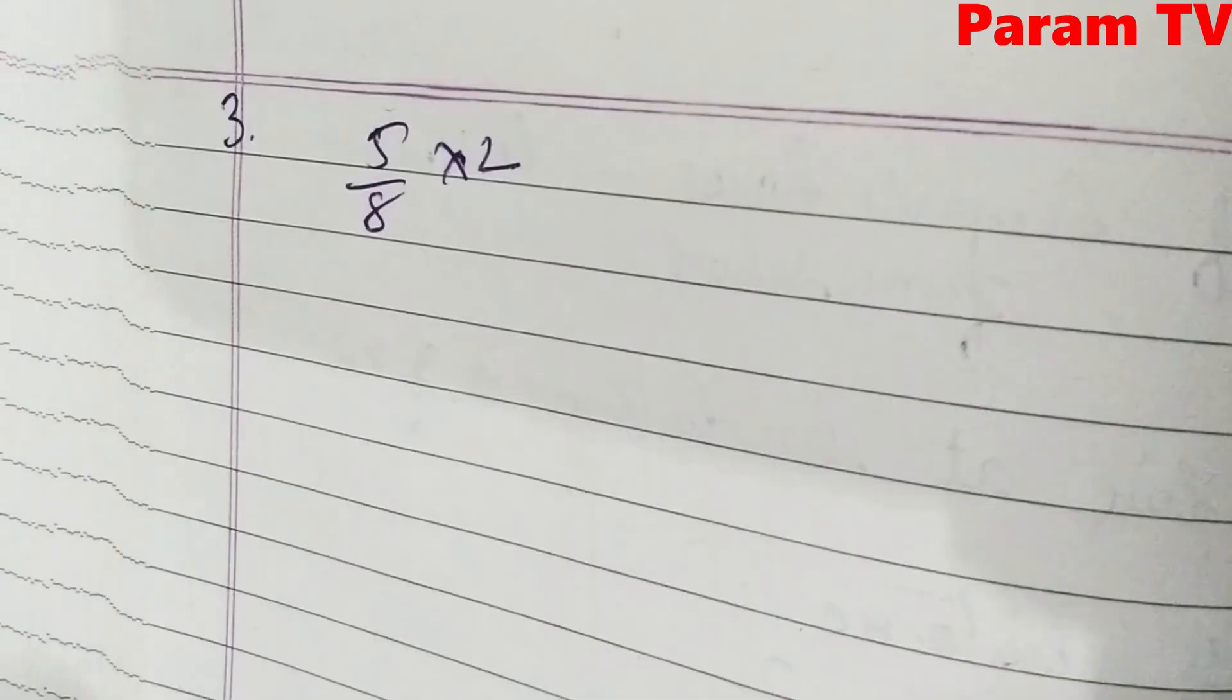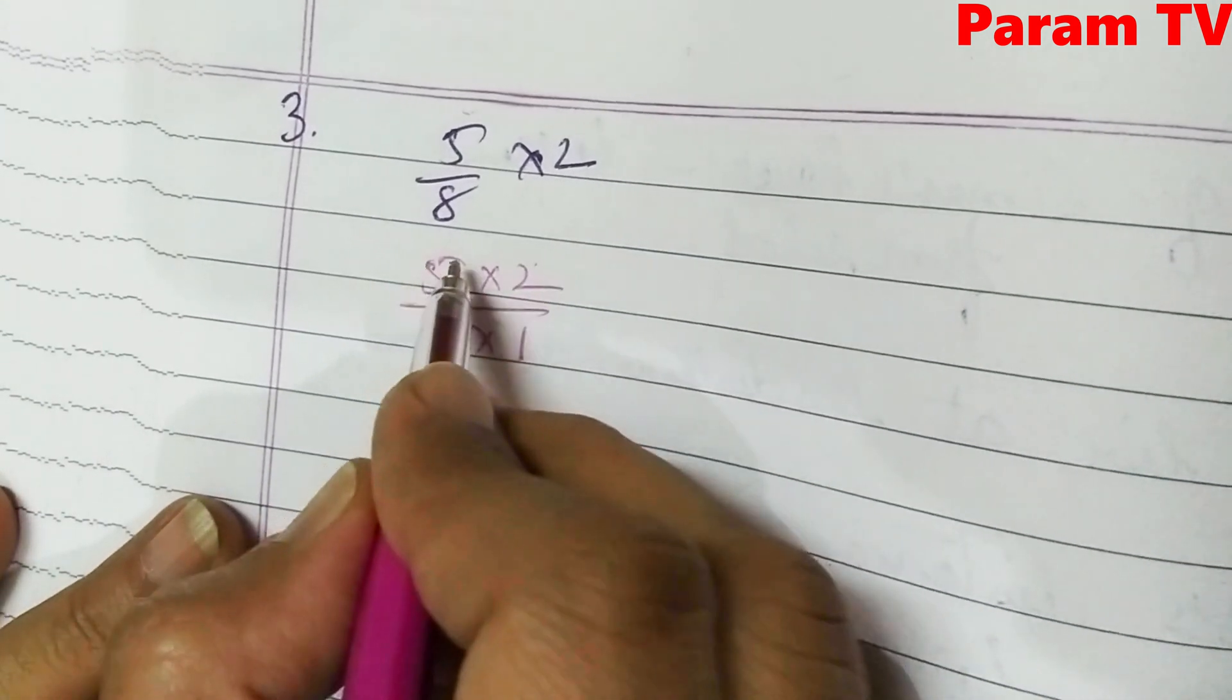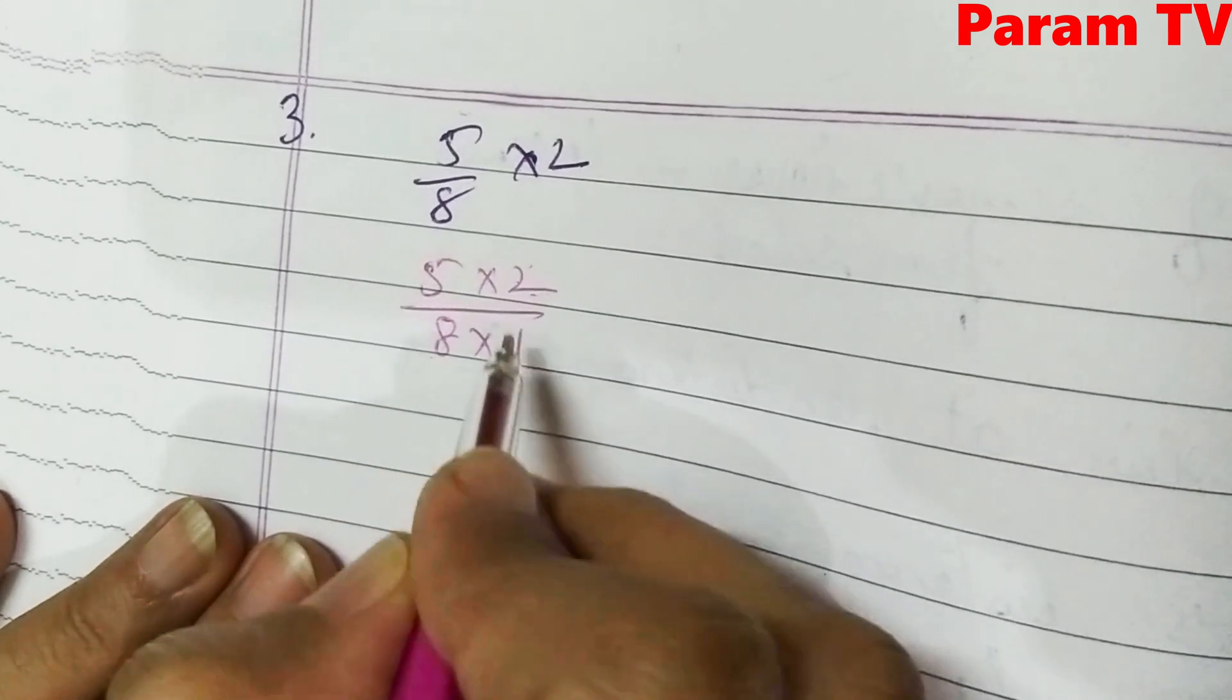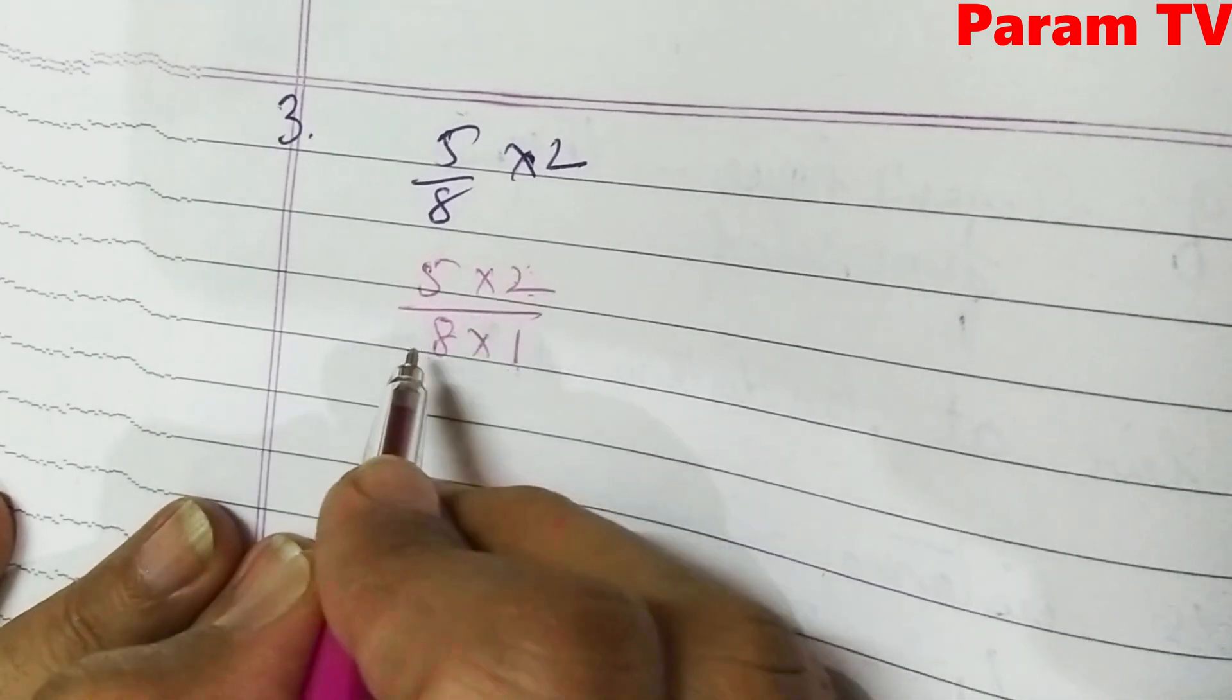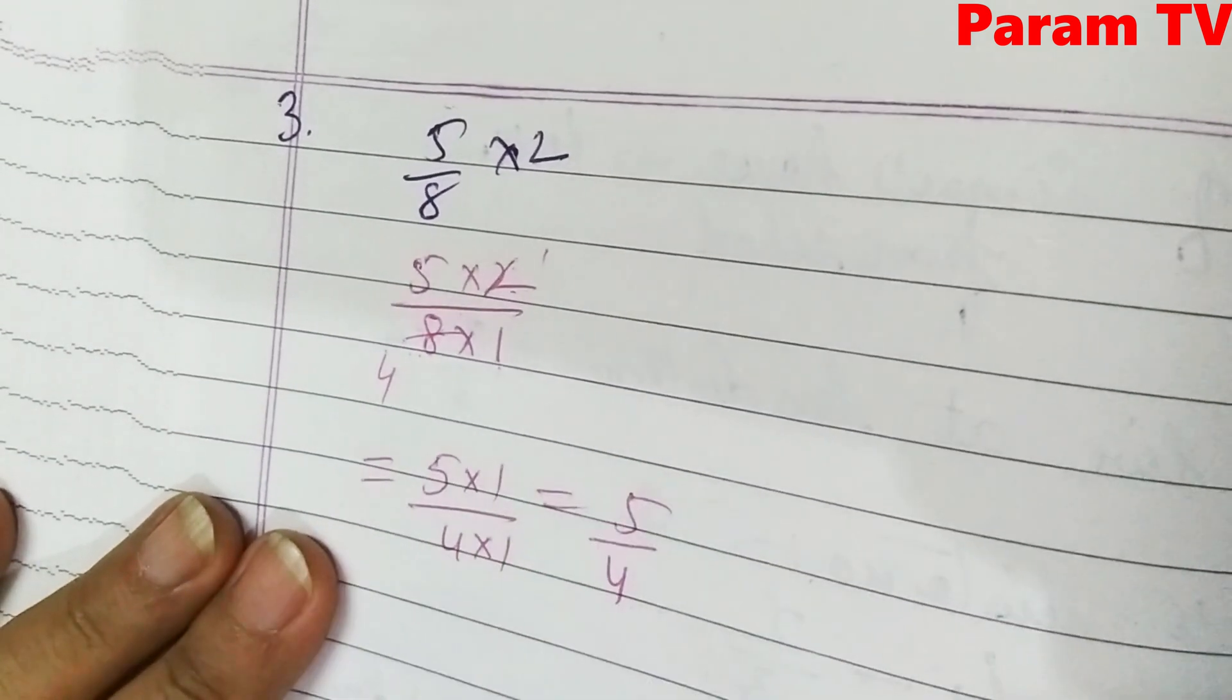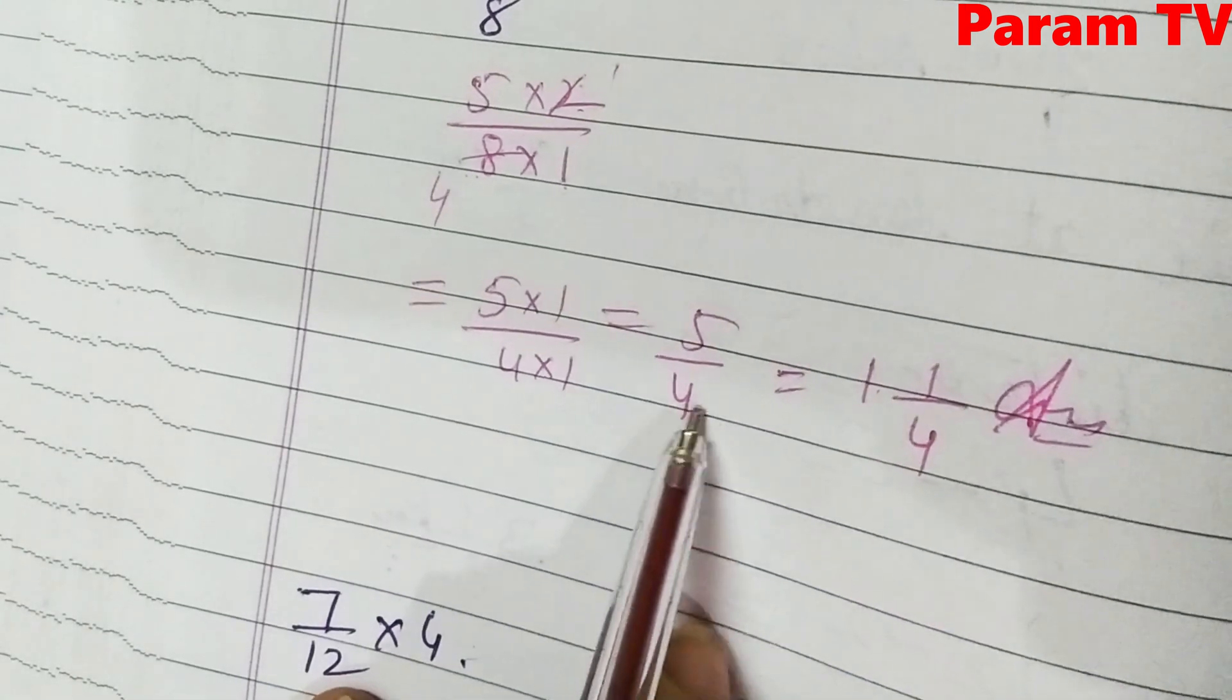Next, third part is 5 by 8 into 2. This is 5 into 2 over 8 into 1. Now let's see, whatever thing cancels, it doesn't cancel. Cancelation is always in numerator and denominator. It can't cancel from numerator and denominator. This is 5 by 4. Now if it's 5 by 4, you can leave it like this. If it's mixed fraction, you can change it. That is 1 1 by 4. This is the answer.